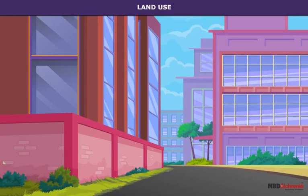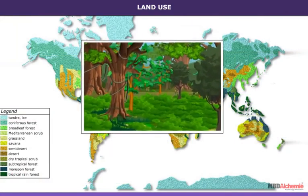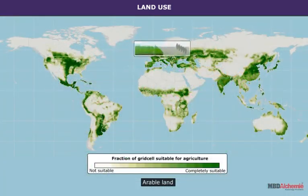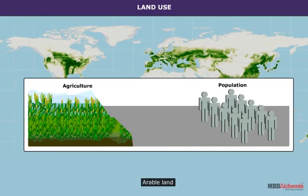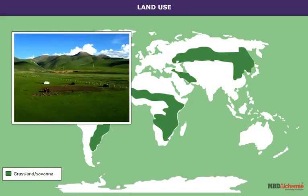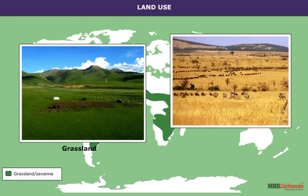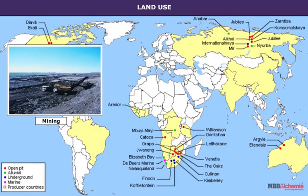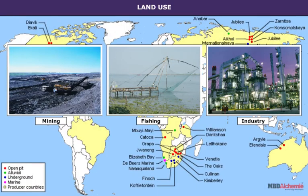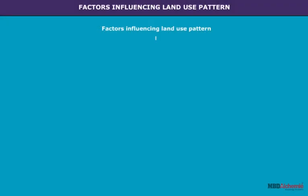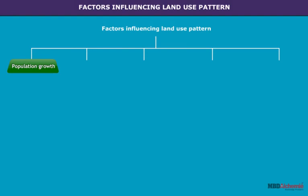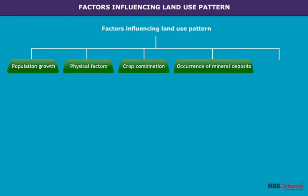Major land use patterns of the world are forests, arable land, pasture land or grasslands, savannah, mining, fishing and industrial centers. Factors influencing land use patterns include population growth, physical factors, crop combination, occurrence of mineral deposits, and technology.